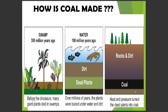How was coal made? 300 million years ago it was a swamp. Many giant plants died in swamps. Then, over millions of years, the dead plants and dirt were buried under water and sediment. Layers of rocks and dirt followed. Heat and pressure from above turned the dead plants into coal. This takes millions and millions of years.